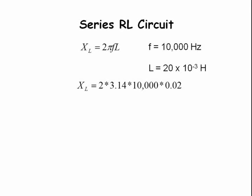When we substitute the values for pi, frequency, and inductance into the equation, this gives us an inductive reactance of 1256 ohms. With one amp flowing through the inductor, that gives us a voltage of 1256 volts.